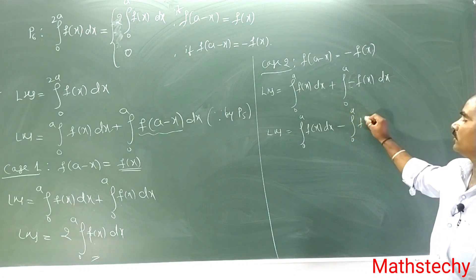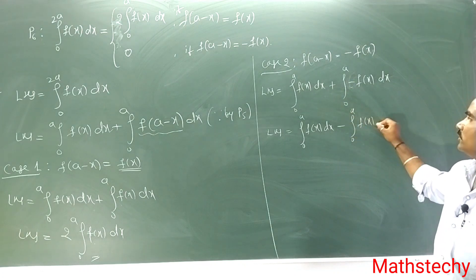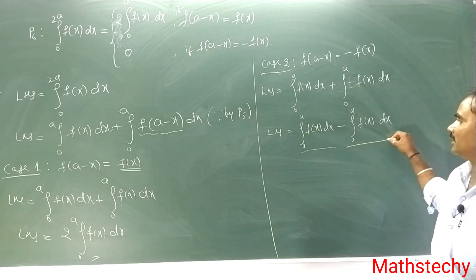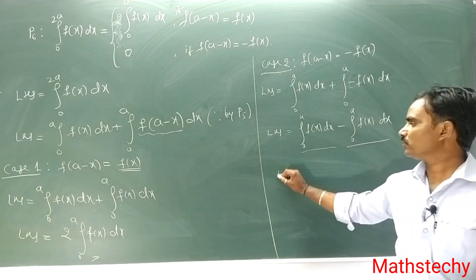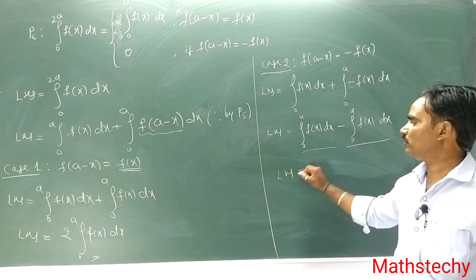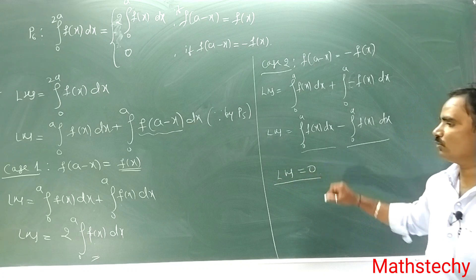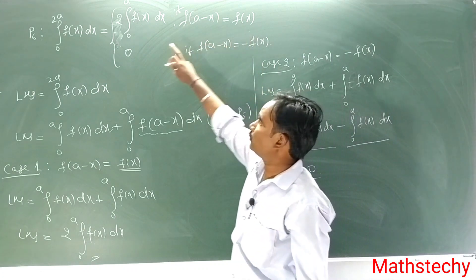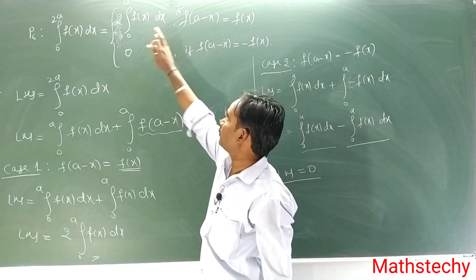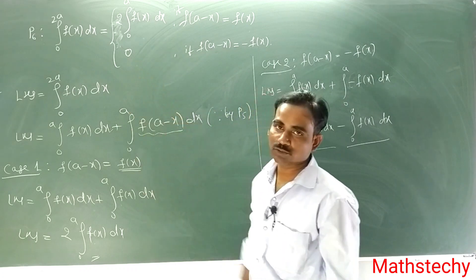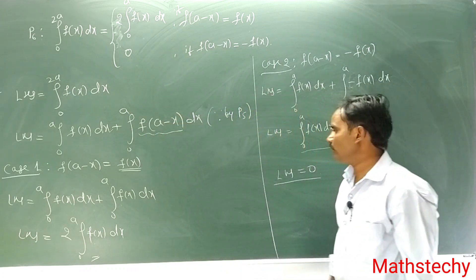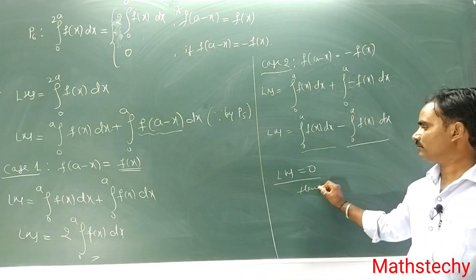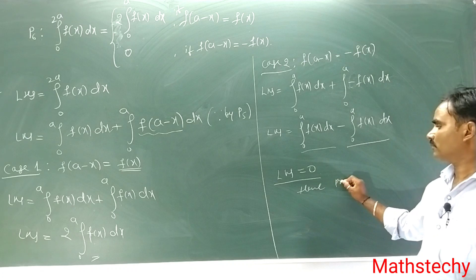0 to a f of x dx. So this way they cancel. Left hand side is equal to 0. Case 2 is solved and proved. So minus f of x gives 0 — proved.